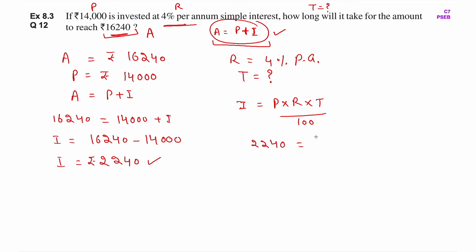2240 equals P which is 14,000, R is 4, T needs to be found, upon 100. The trailing zeros cancel out. So T equals 2240 upon 140 into 4. When you shift these numbers with T to the other side of the equal sign, they go to the denominator. Now let's simplify this.